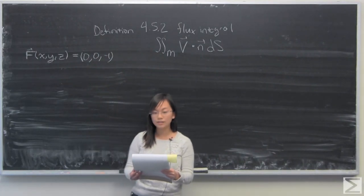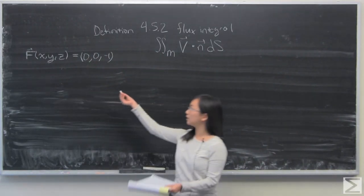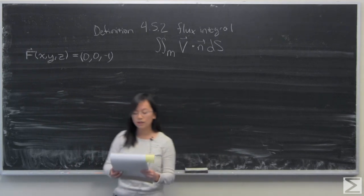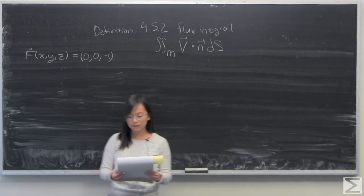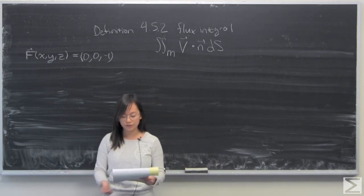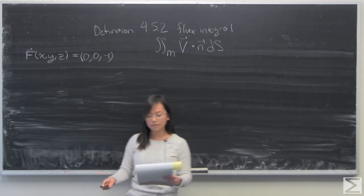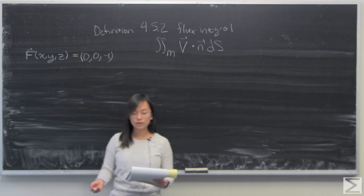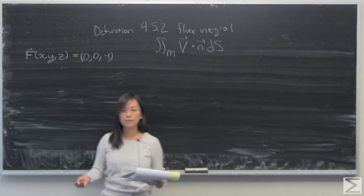So for this problem, you're given a constant vector field f(x,y,z) equal to (0, 0, -1). And what you're asked is to find the flux of f through a surface M, which I will draw for you in just a moment. M is the bottom hemisphere of radius 3 centered around the origin with a disk on top to cap it off.